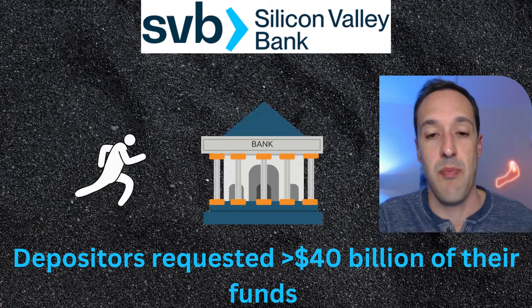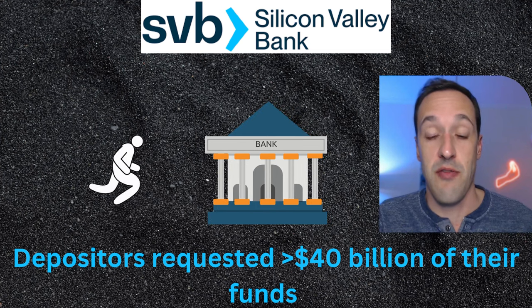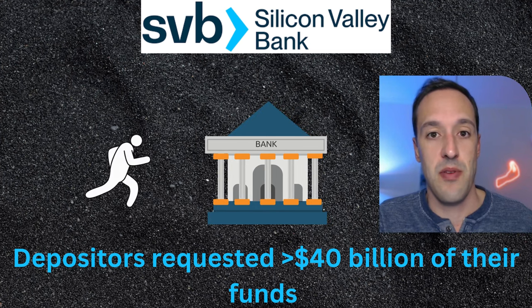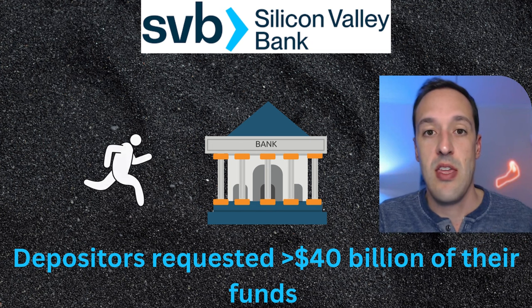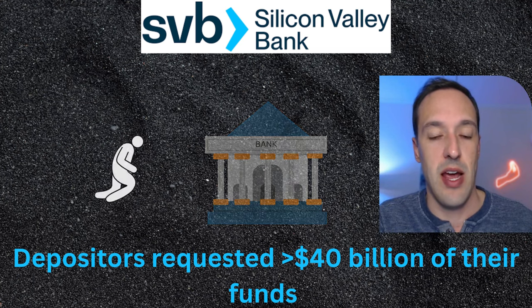So what happened is there was a bank run. Late last week, depositors requested over $40 billion of their funds to be withdrawn. Any bank, regardless of how well capitalized it is, is going to flop if too many depositors ask for their money back all at the same time. The bank doesn't just keep that cash lying around — banks make money by doing things with the money that you put with them. It was revealed last week that Silicon Valley Bank notched a $1.8 billion loss to honor some customer deposits, and that's what sparked this bank run on Thursday and Friday.